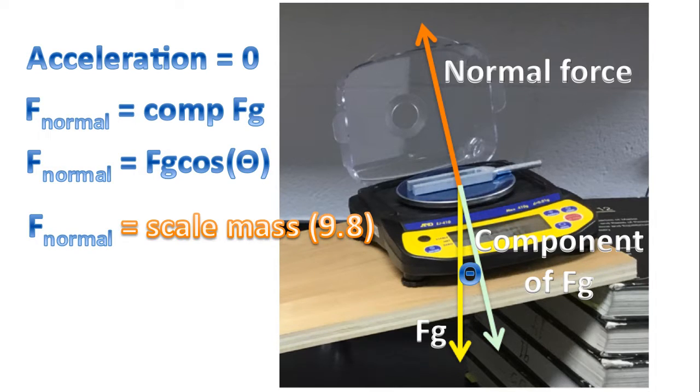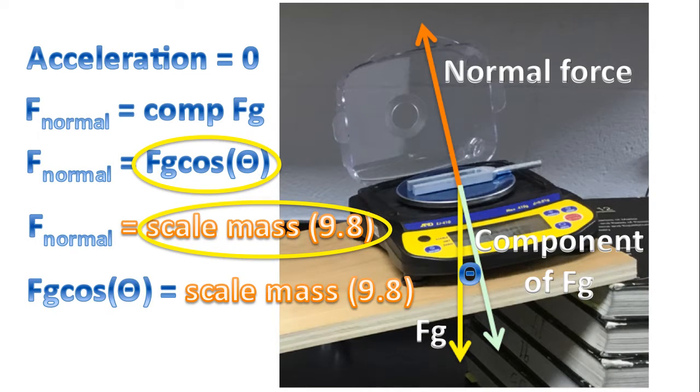But a few moments ago, we had another expression for the normal force. It was whatever the scale registers, scale mass, multiplied by 9.8. And so, what we can do is equate those two expressions for the normal force. And we'll write down that equation here. The weight times cosine of the angle is equal to the scale mass times 9.8.